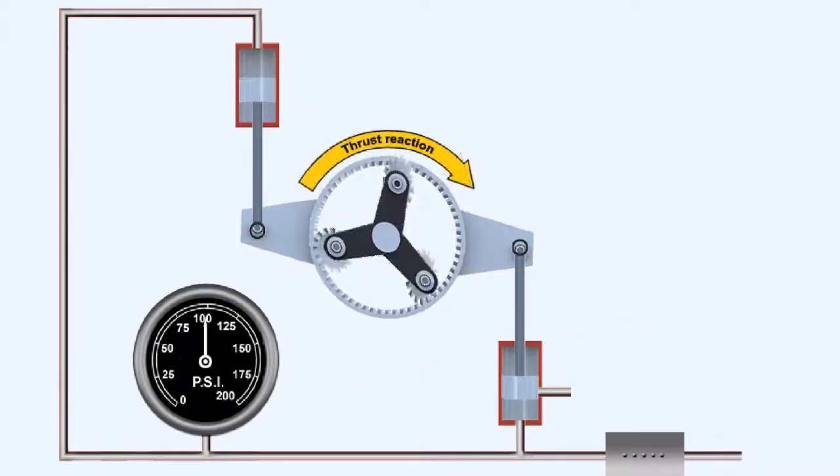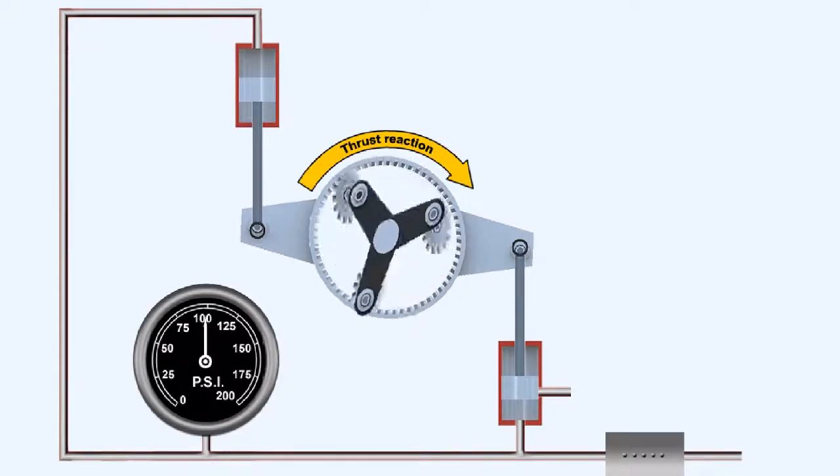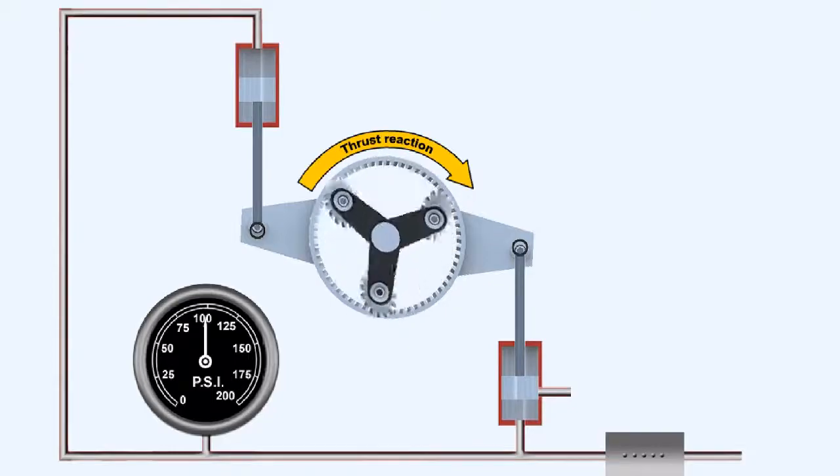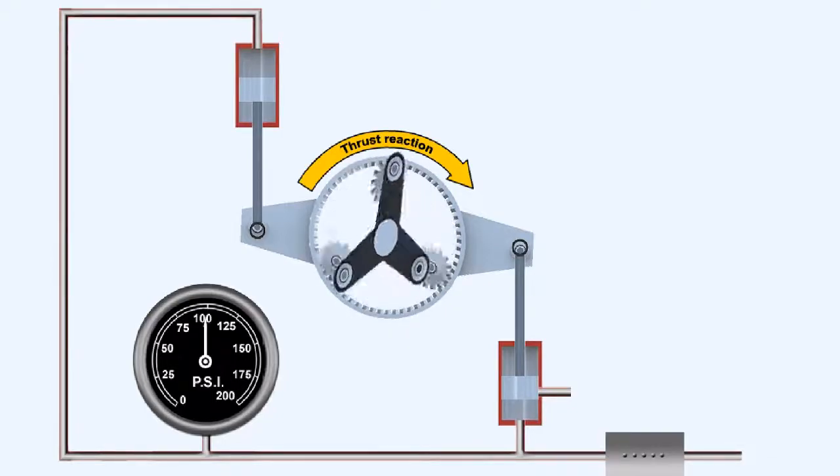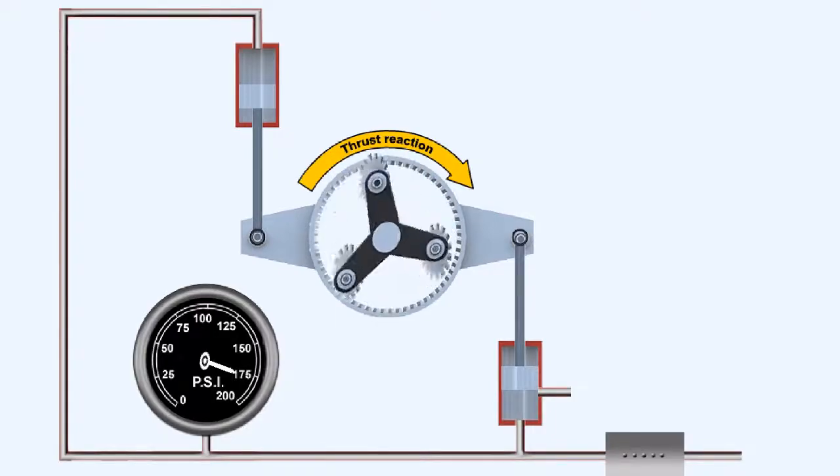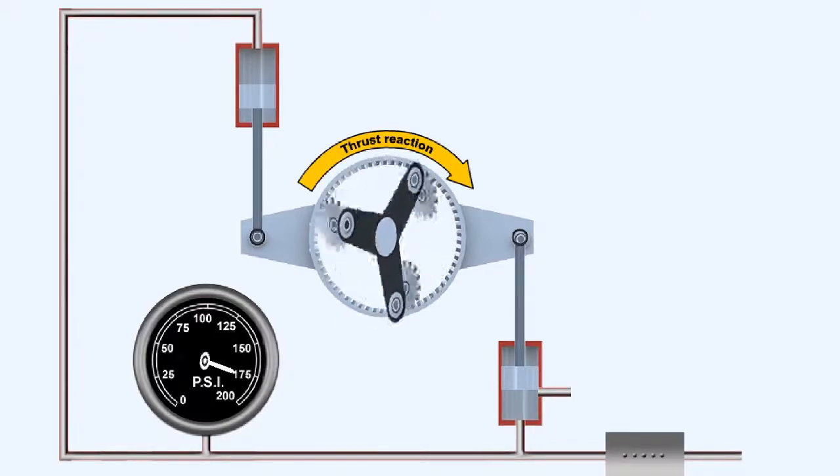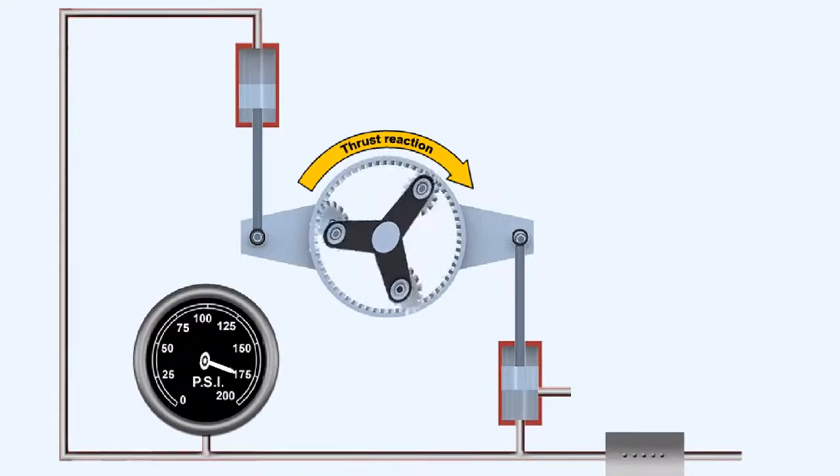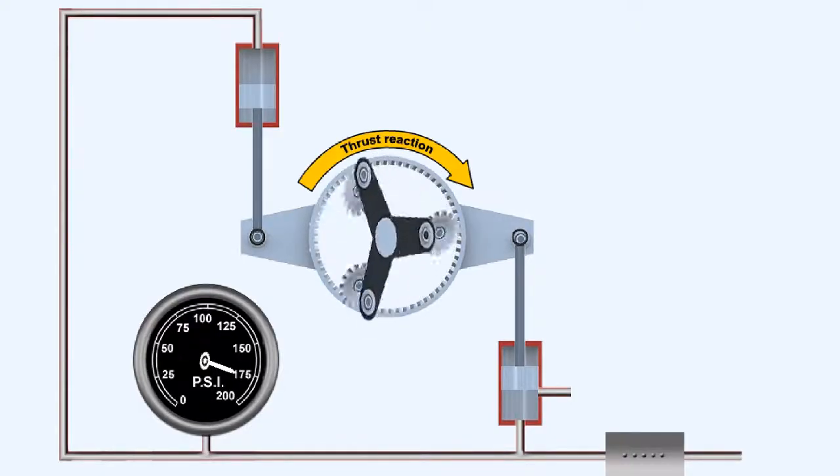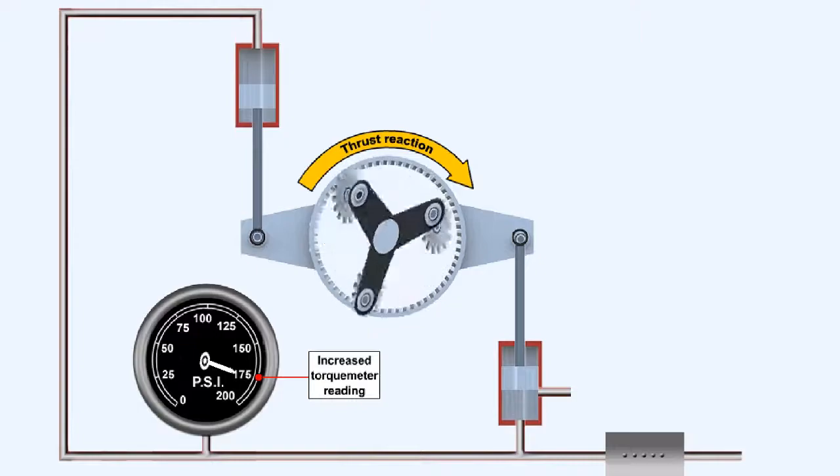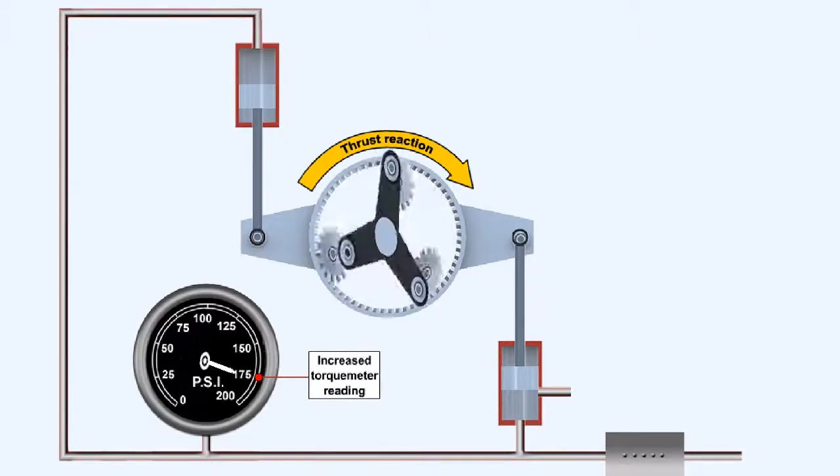If the engine torque increases, the piston will be driven, by rotation of the stationary ring gear, to cover more of the bleed hole. This will cause the oil pressure within the cylinders to increase, until the piston moves back into the sensitive position, where torque meter oil pressure once again balances engine torque. The increase in oil pressure required to achieve this balance is indicated on the torque meter gauge as a rise in engine output torque.